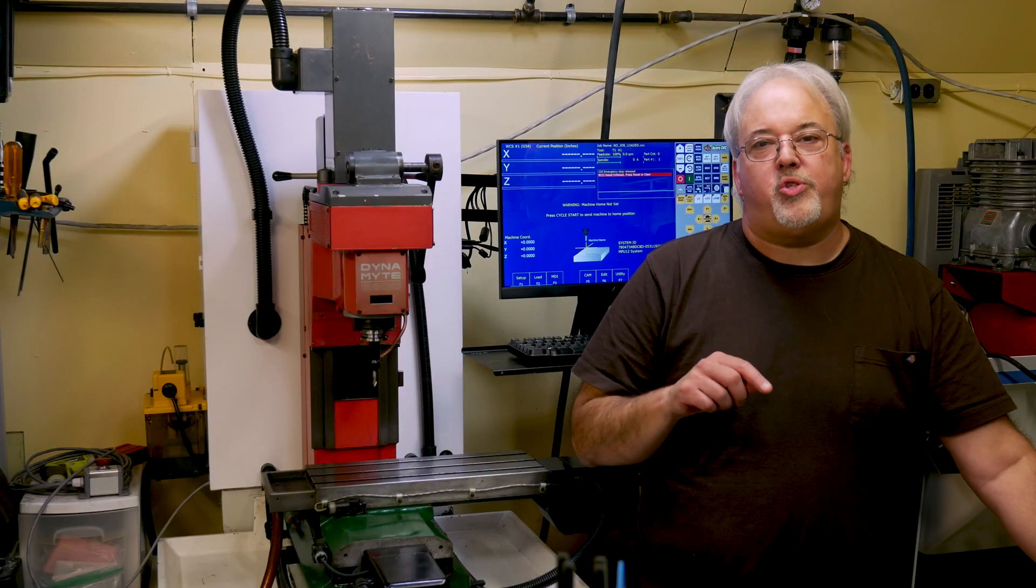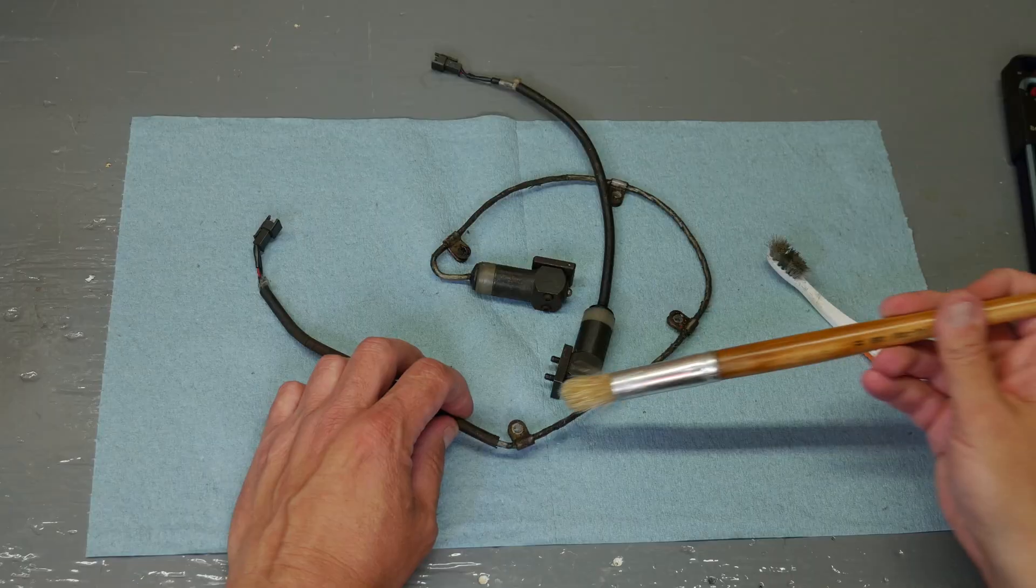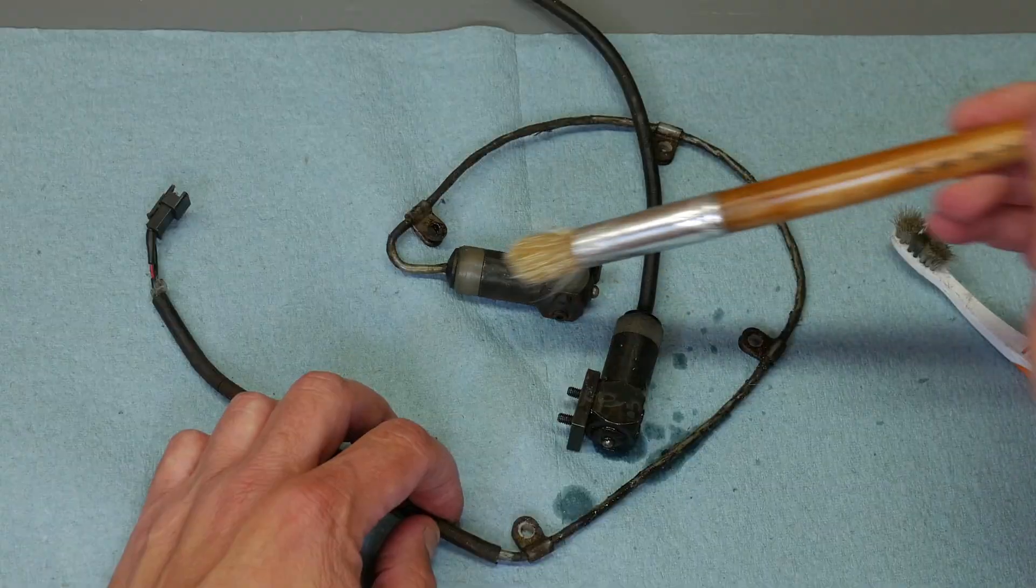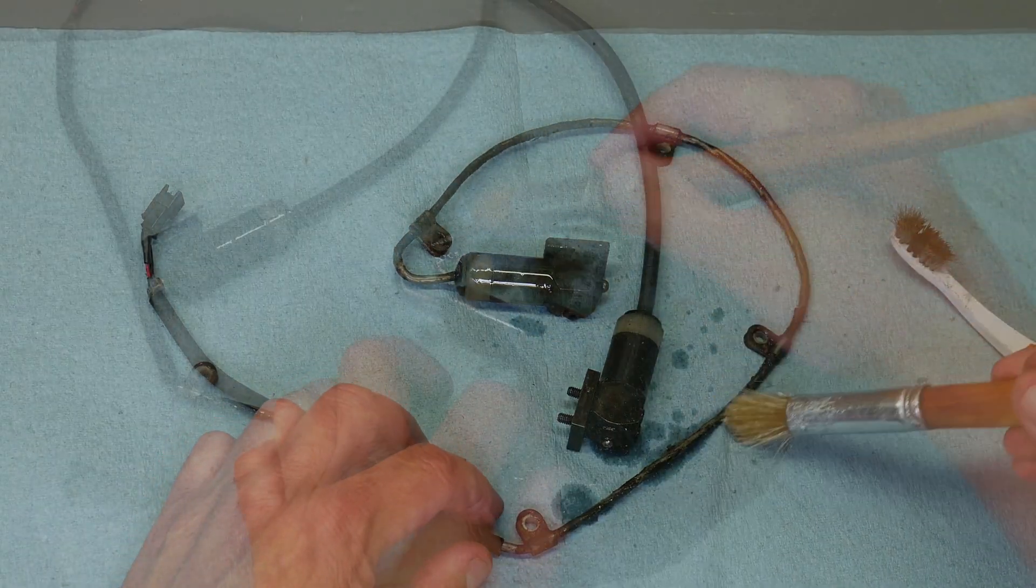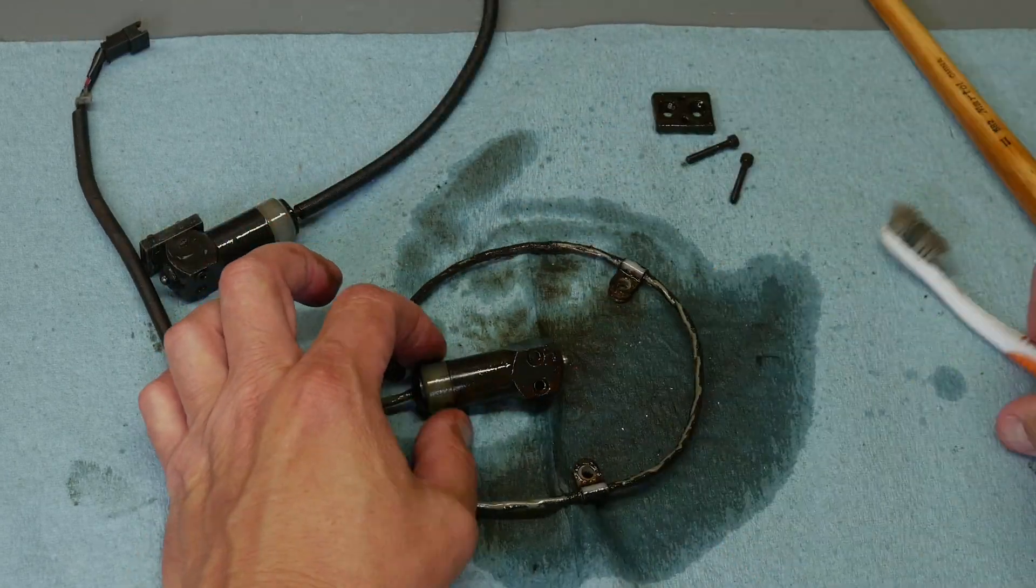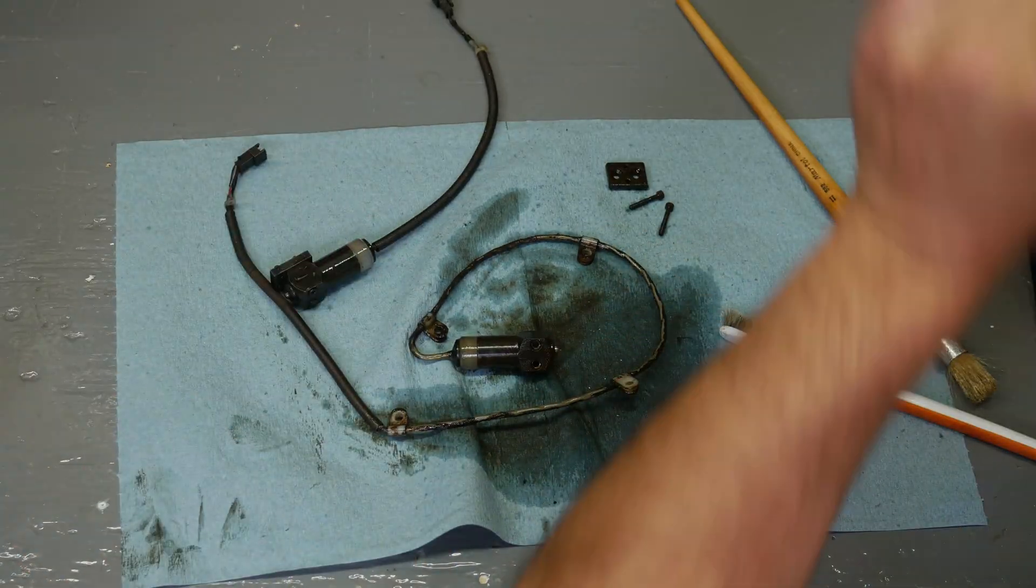Next on the agenda, the home switches for the X and Y-axis had to be mounted. Prior to mounting them, I wanted to clean them up a bit. I just soaked them down with some WD-40 and did a bit of scrubbing to get off the caked on grease.